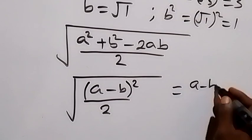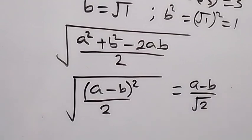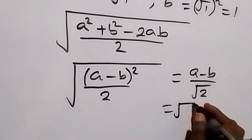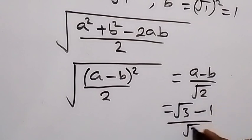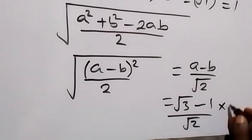a minus b all, then divided by root 2 in the denominator. Then a minus b, we have a as root 3 and b as root 1. So here we can say this is root 3 minus root 1, that's 1, then divide by root 2. Then from here we can rationalize what we have here and multiply by root 2, then divide by root 2.